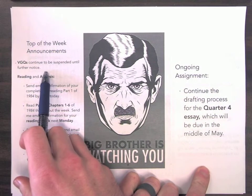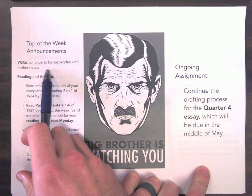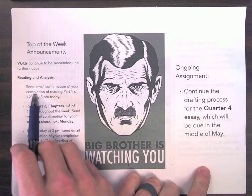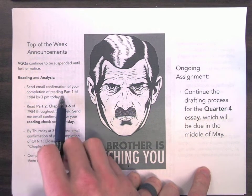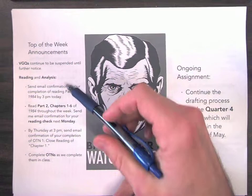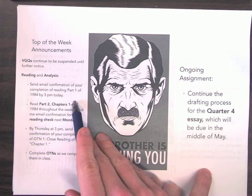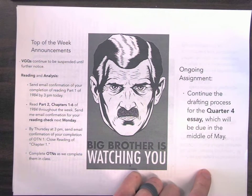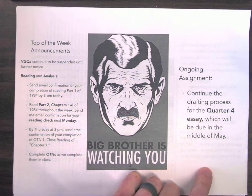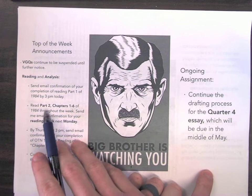So we continue to have no vocabulary and grammar quizzes. Today you need to send an email confirming your completion of your reading for Part 1 of 1984. You need to have read 100% of Part 1 of 1984, which we are going to analyze throughout the course of this week, the eight chapters of Part 1.